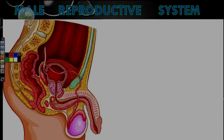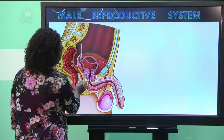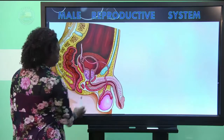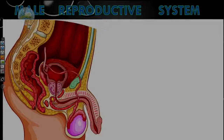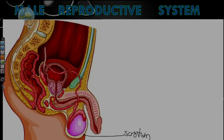At the back here is the end of the large intestines coming down to the anus. The male reproductive system comprises the part in the front. So at the base here, we have that sac that hangs outside the body, and this is called the scrotum.